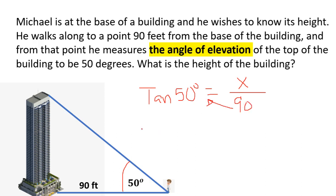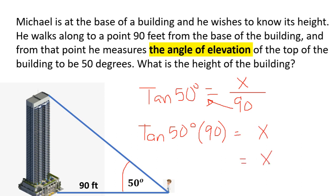Do the cross multiplication. Tangent 50 degrees times 90 equals x. Using your calculator, 1.19 times 90 gives us the height of the building, which is 107.3.